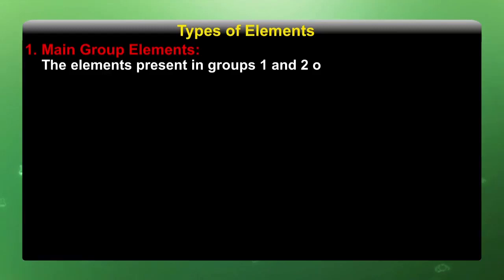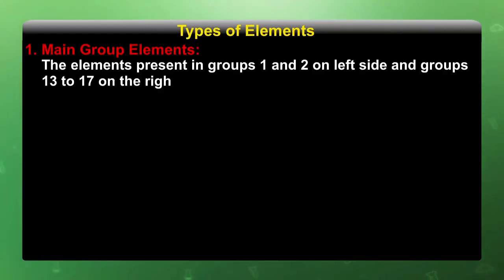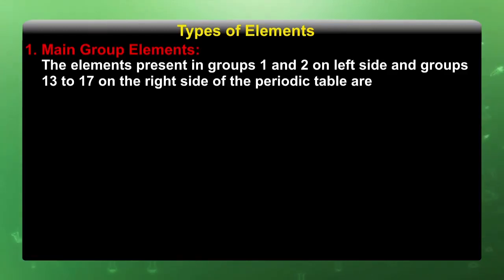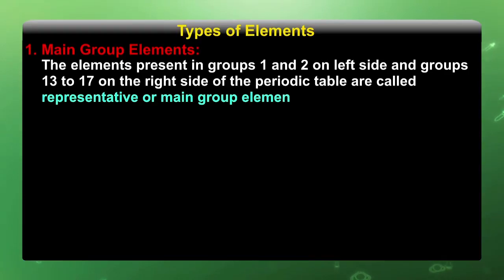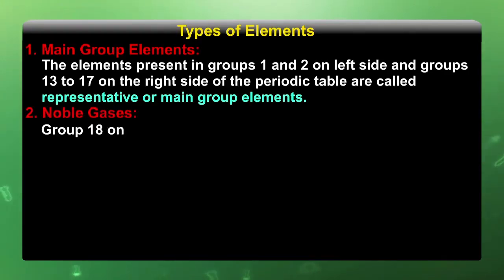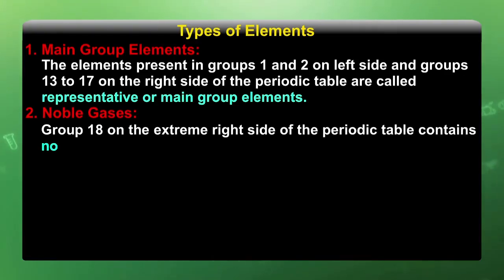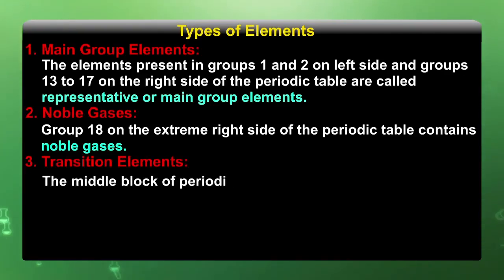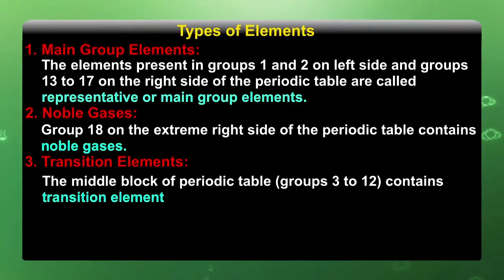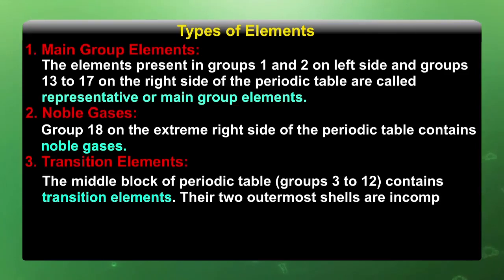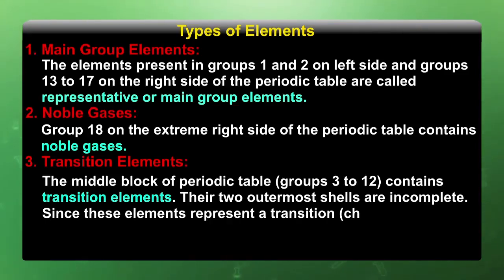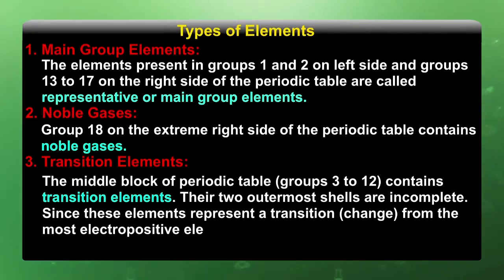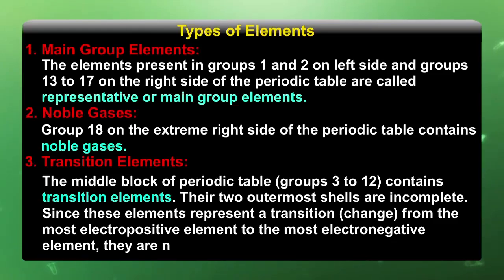Main group elements: the elements present in groups 1 and 2 on the left side and groups 13 to 17 on the right side of the periodic table are called representative elements or main group elements. Noble gases in group 18 on the extreme right side contain noble gases. Transition elements occupy the middle block, groups 3 to 12. The two outermost shells are incomplete. Since these elements represent a transition from the most electropositive to the most electronegative elements, they are termed transition elements.